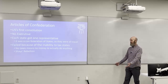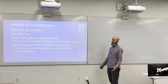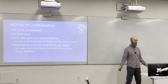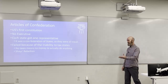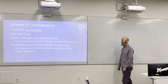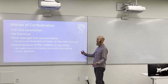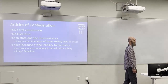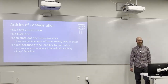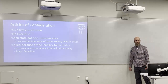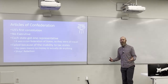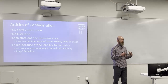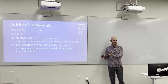The Articles of Confederation, the first U.S. Constitution, was quite different. There was no executive, no president, and no federal court system. They only had one branch of government: the legislative — Congress. Each state sent one representative and got one vote. It was a confederation — 'con' means together, 'federation' is a group coming together, like the Federation of Planets in Star Trek. Each member retains its individual identity and authority.